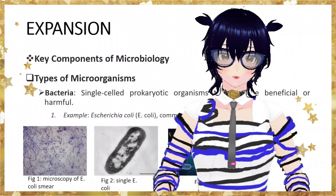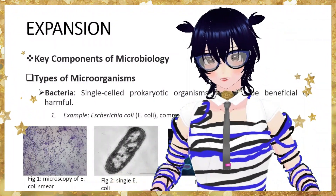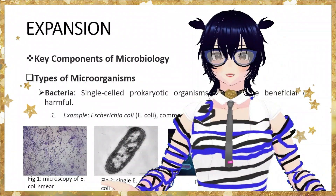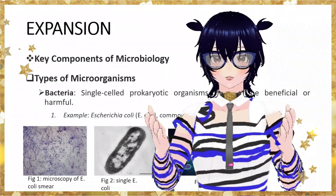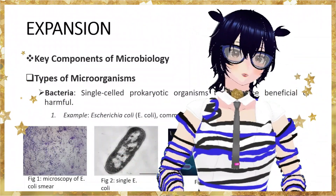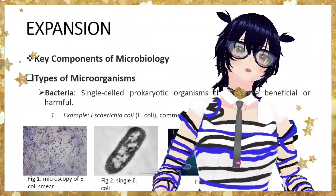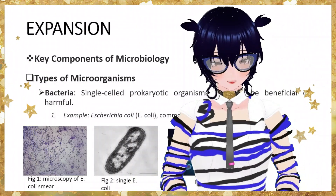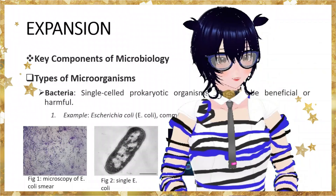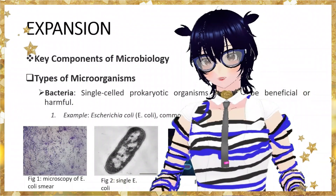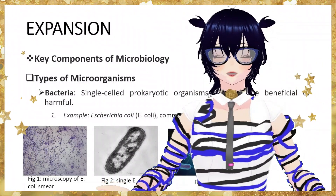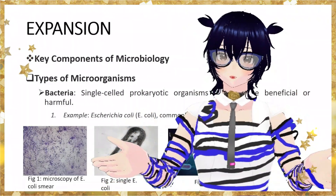An example is Escherichia coli, or E. coli for short. Learning scientific names is actually pretty difficult, but E. coli is a pretty common bacteria so make sure to remember its name. These are commonly found in the intestine — we're talking about the human intestine.